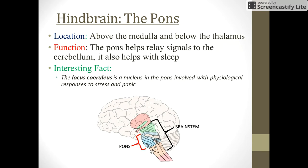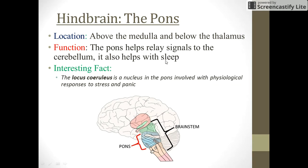The next part is the pons, located right above the medulla — shown as the little blue area. It helps relay signals to the cerebellum and also helps with sleep. An interesting fact: the locus coeruleus is a nucleus in the pons involved with our physiological response to stress and panic. So locate the pons right above the medulla on your drawing.